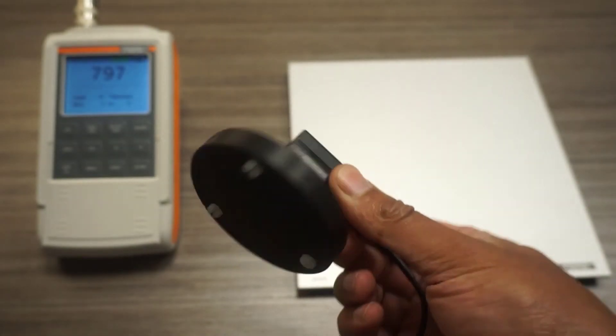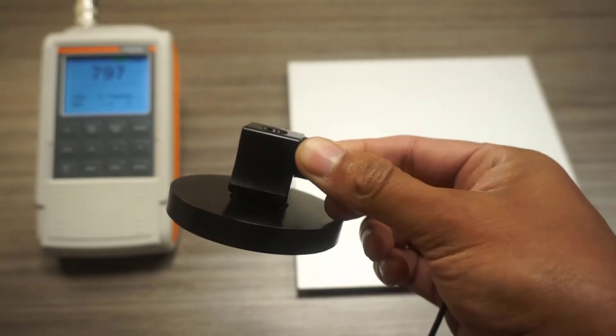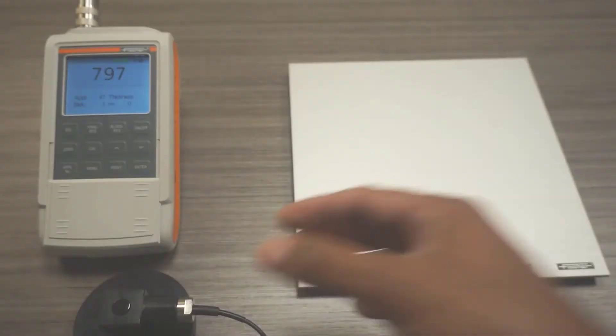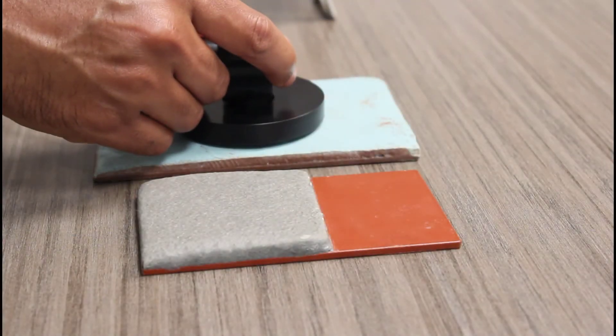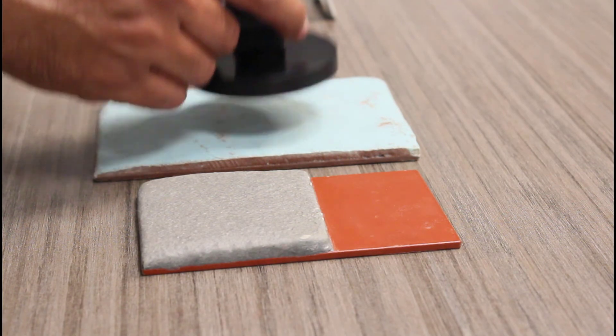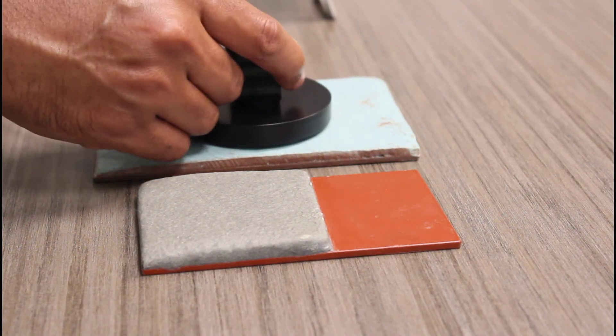So there you have it. The dual scope FMP40 paired with the compact FA70 probe can easily and accurately measure thick intumescent coatings on structural steel or aluminum.